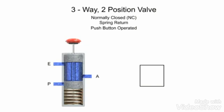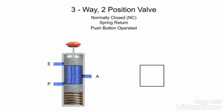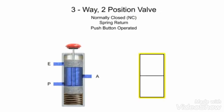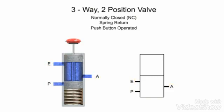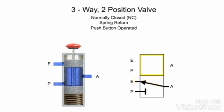The most important applications in fluid power for three-way valves are for directional control. Here we have a typical three-way valve with two operating positions. This valve has an inlet port P, exhaust port E, and output port A. In its normal position, inlet port P is blocked and outlet port A is connected to exhaust port E. The second position allows fluid to flow from the pressure port P to outlet port A and blocks exhaust port E. The valve is also spring return and push button operated.